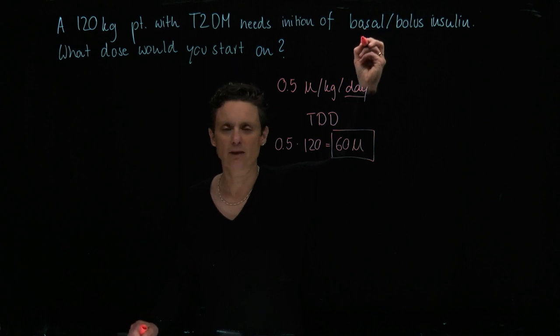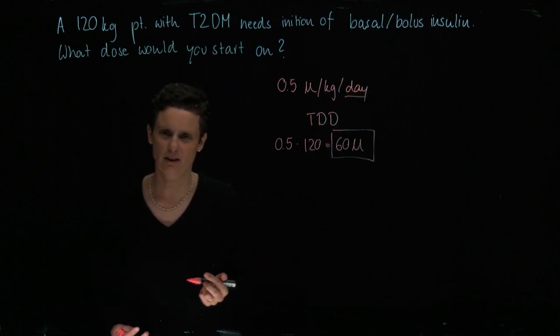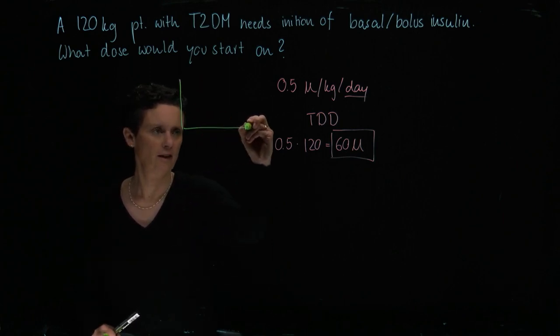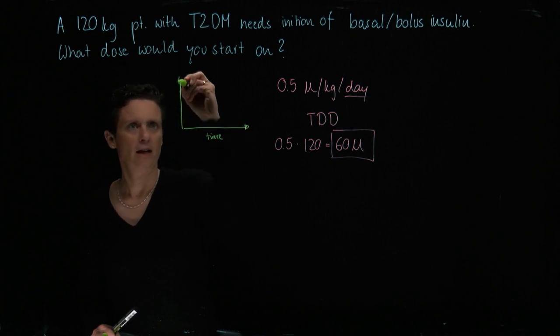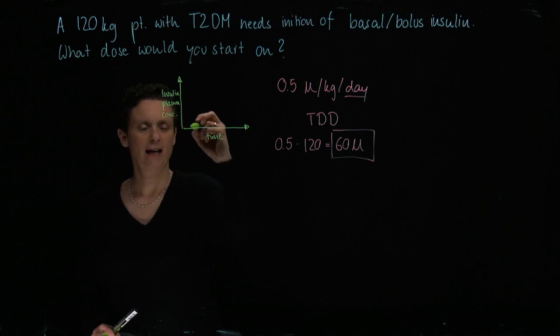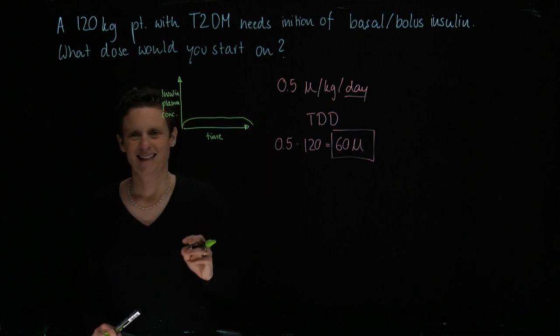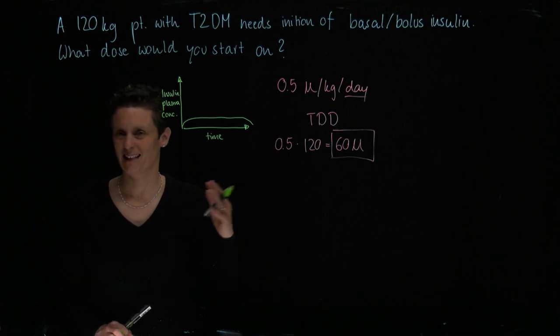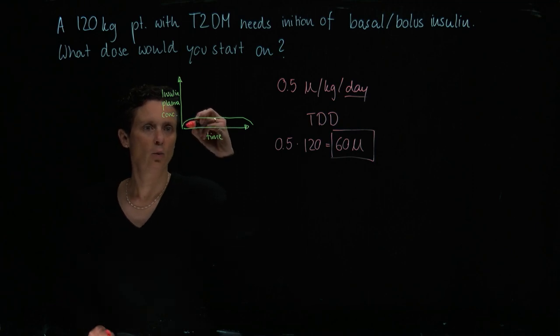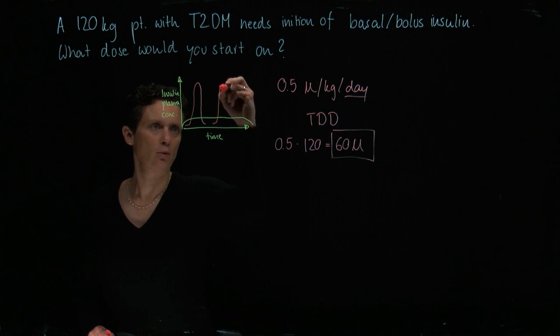Now as we know, there are always two kinds of insulins. We have the basal insulin. Just to briefly remind you, when we have here the time and this is the insulin concentration in the plasma, usually we want something that gives us this steady insulin release from the pancreas that gets us over the night and in between meals.